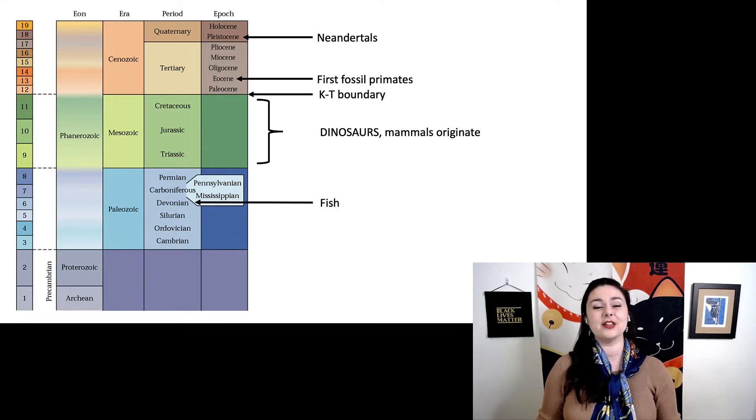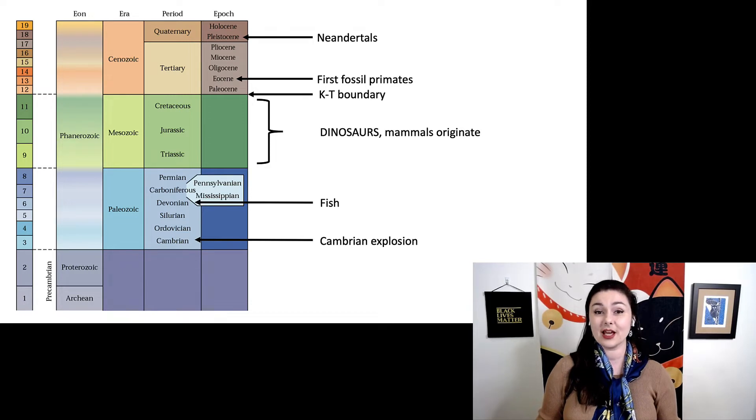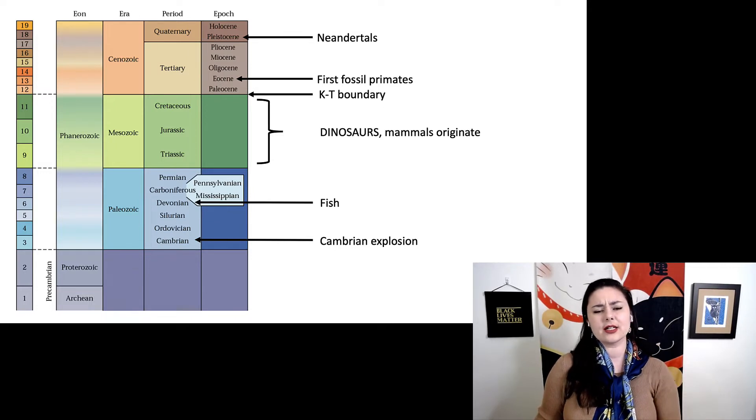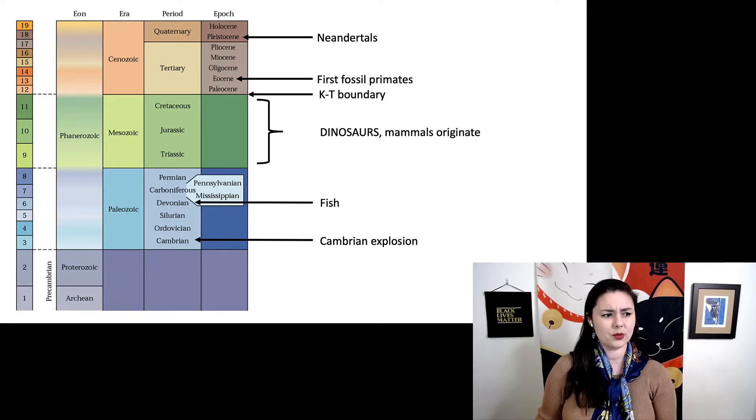Going back further, the Devonian, that's where we see a lot of fish originate. We have the Cambrian explosion right there at the very beginning of the Paleozoic. But let's try to organize this a little bit more because we are dealing with a really big period of time, and that's a little bit difficult to conceptualize.